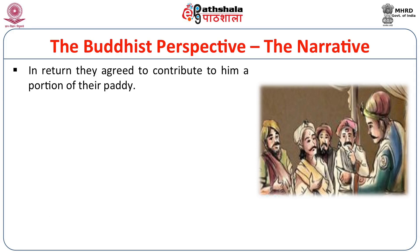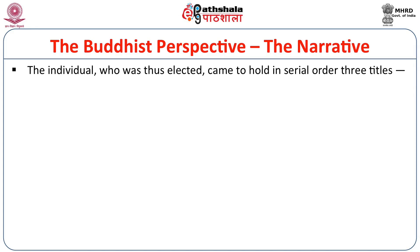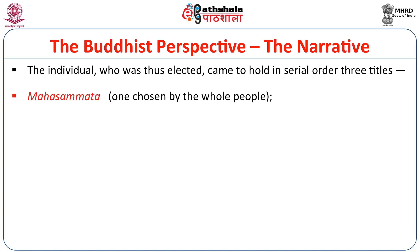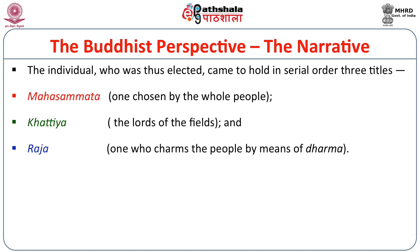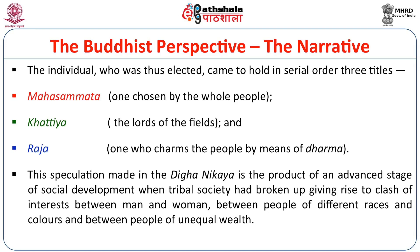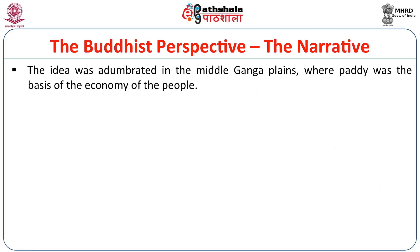In return, they agreed to contribute to him a portion of their paddy. The individual who was thus elected came to hold in serial order three titles: the Mahasammato, one chosen by the whole people; the Khattiya, the lords of the field; and Raja, one who charms the people by means of dharma. This speculation made in the Digha Nikaya is the product of an advanced stage of social development, when tribal society had broken up, giving rise to clash of interests between man and woman, between people of different races and colors and between people of unequal wealth. The idea was enunciated in the middle Ganga plains where paddy was the basis of the economy of the people.